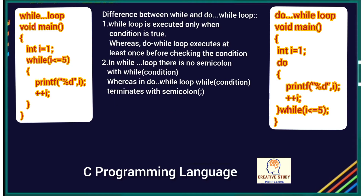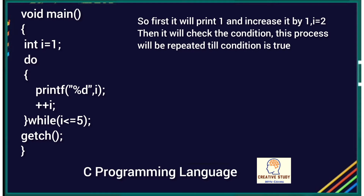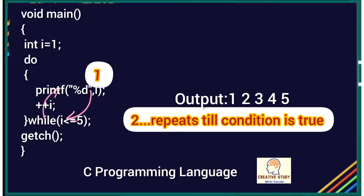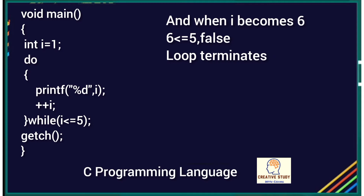The key difference between while and do-while: the while loop executes only when the condition is true, but the do-while loop executes at least once before checking the condition. Also, in the while loop there is no semicolon with the while condition, whereas in do-while there is a semicolon after the while condition. In this do-while program, it first prints one and increments, then checks the condition, repeating till the condition is true — printing 1, 2, 3, 4, 5. When i becomes six the condition is false and the loop terminates.